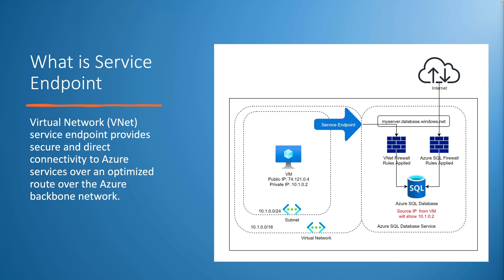In the given image, on the left-hand side we have a virtual network, a subnet, and one VM deployed inside that subnet. On the right-hand side we have an Azure SQL Database. We can connect to SQL DB from the virtual machine using Service Endpoint.